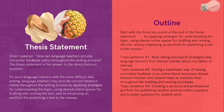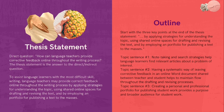The third key point: 'by employing an e-portfolio for publishing a text to the masses.' The third topic sentence reads: 'Creating a personal and professional e-portfolio for publishing student work provides a purpose and a broader audience for student work.' Again, I'm using direct repetition — repeating the word 'e-portfolio' and the word 'publishing.' But my attempt in the topic sentence is to be more specific by stating 'personal and professional e-portfolio' and also using the word 'purpose,' rewording 'publishing a text to the masses' as 'a broader audience' — basically saying the same thing in a slightly different way.